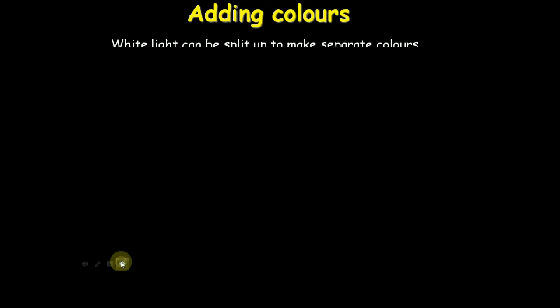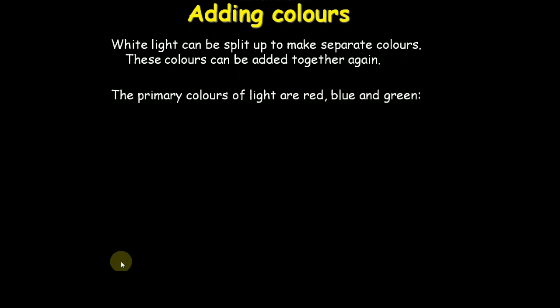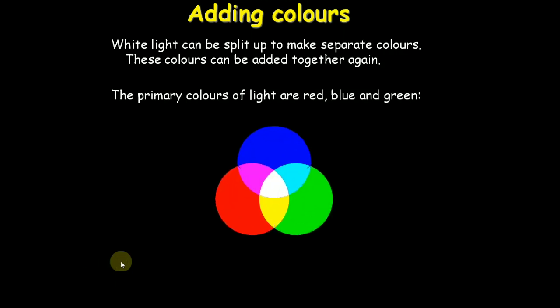Adding colors. Light can be split up to make separate colors. These colors can be added together again. The primary colors of light are red, blue and green. You are seeing the primary colors.